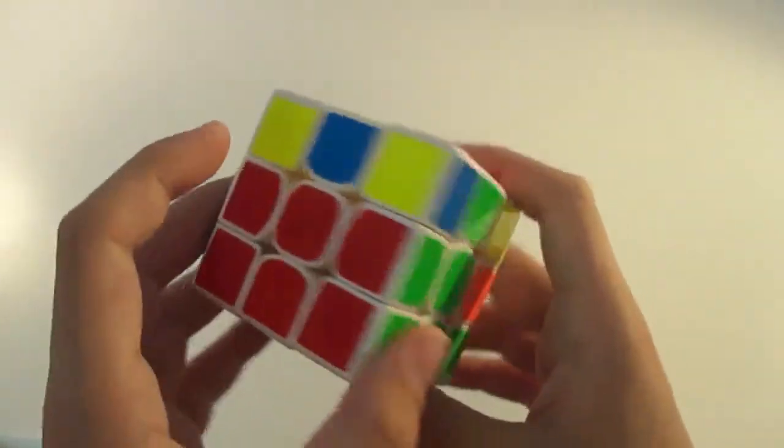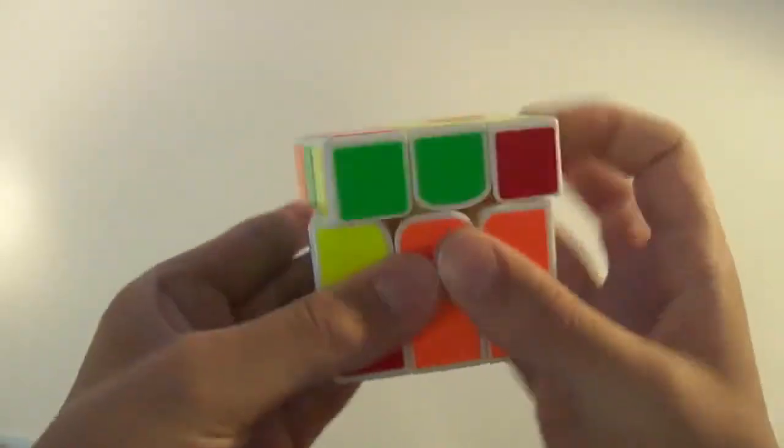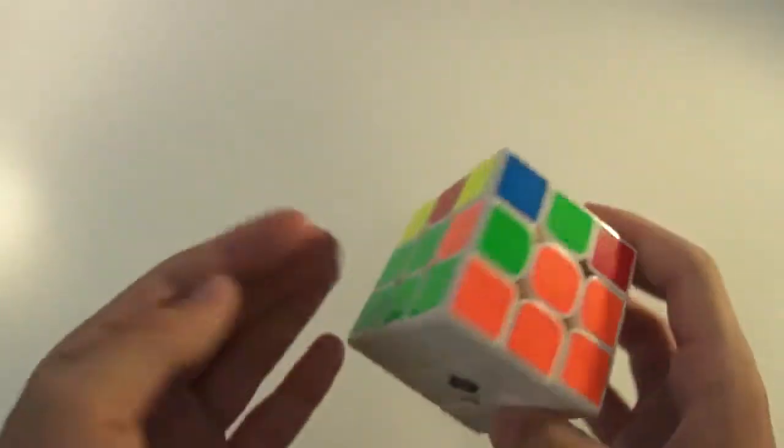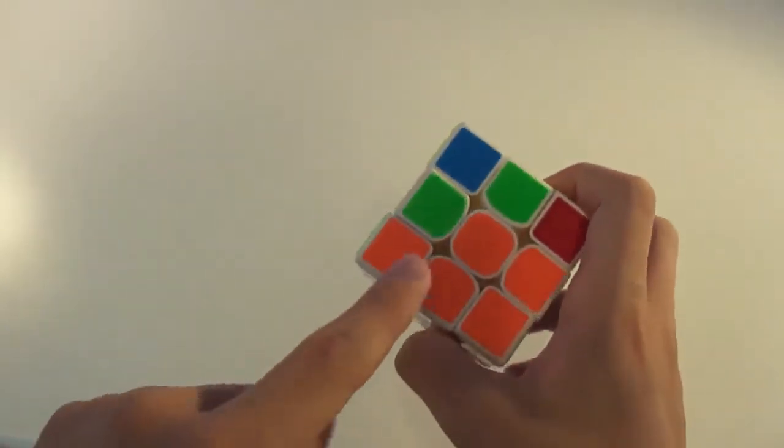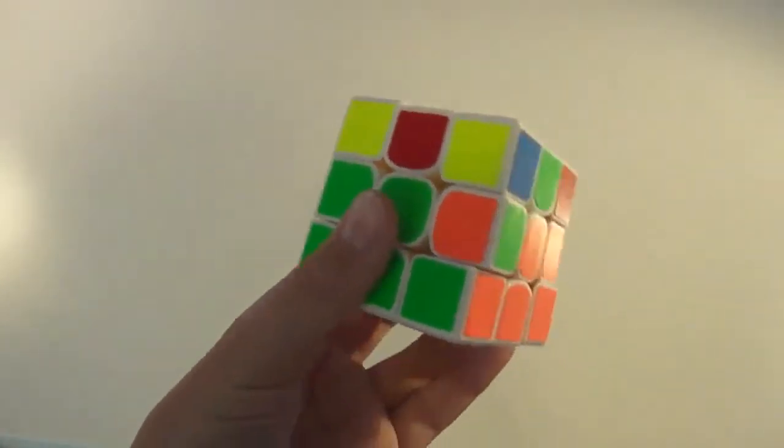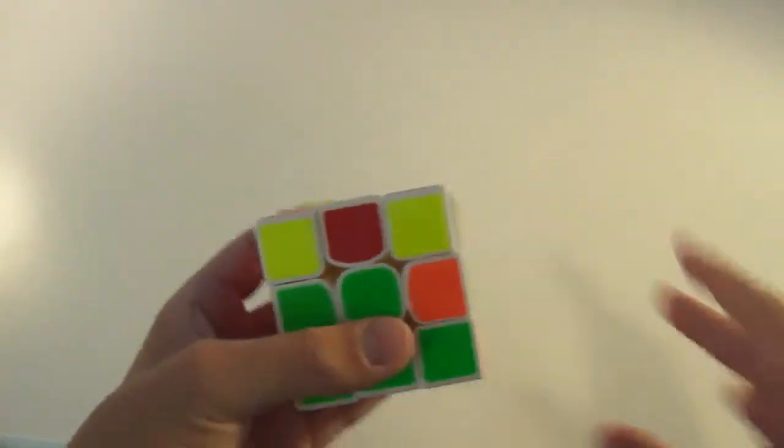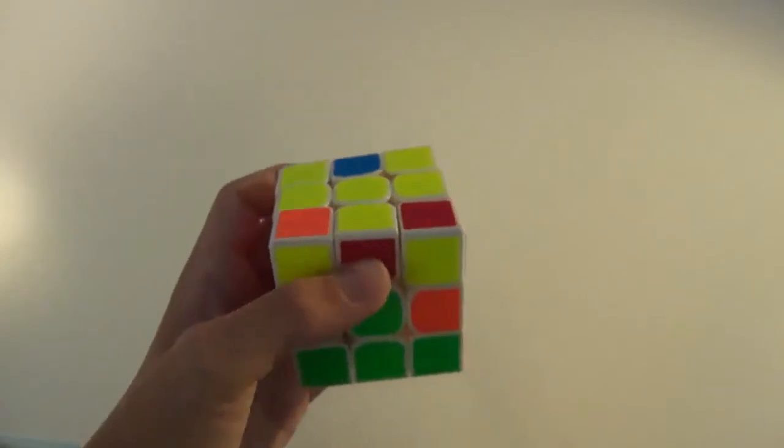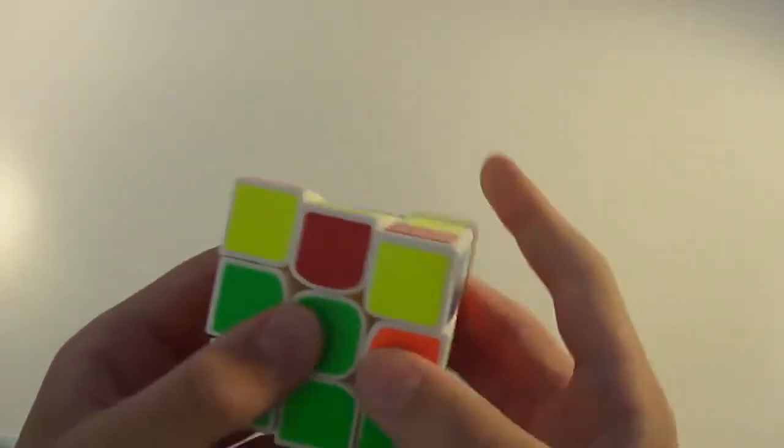So, that is how you solve those two cases. Then, there are some other cases. Here we have this edge. Now, there's this case, where this edge is in the right spot between the orange and green centers, except it's flipped. So, this isn't matching.